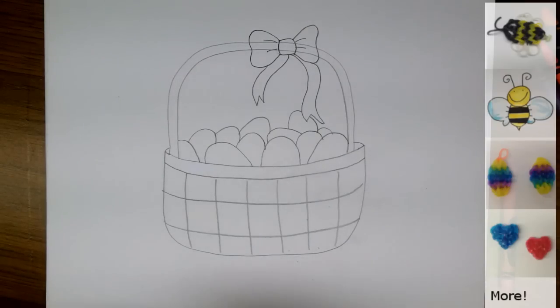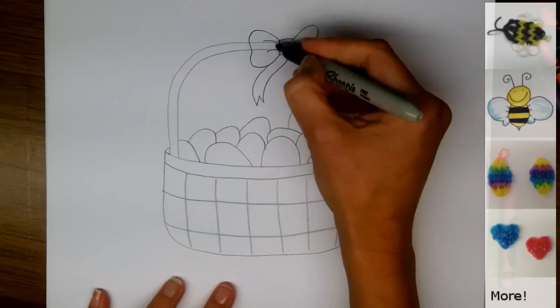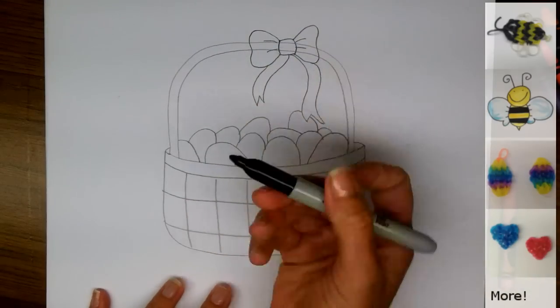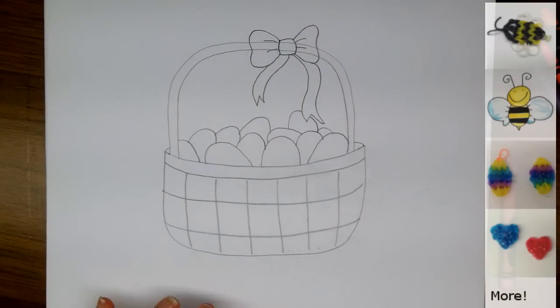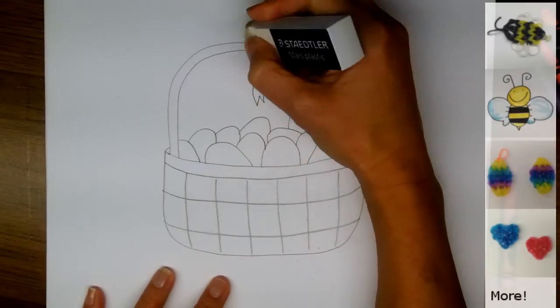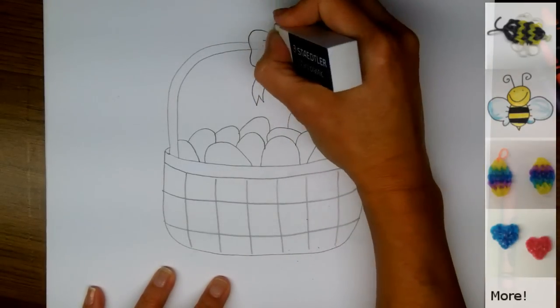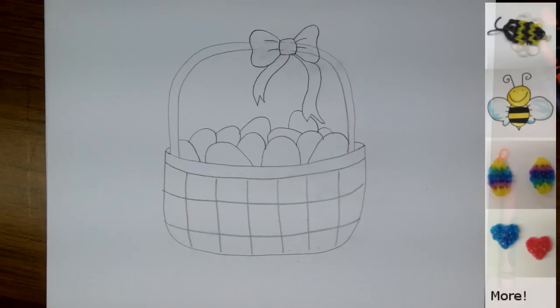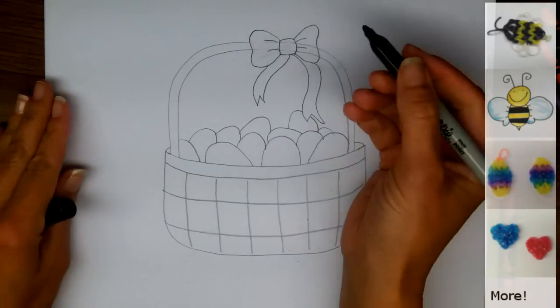Now I'm going to trace over all my lines with my sharpie. I'm going to be careful when I do the bow not to trace the inside of my handle showing through the bow. So if you want, you can erase those lines beforehand, but I'm going to be careful, so I'm not actually going to erase them now. I'll wait and erase them after I've got all my permanent lines done.